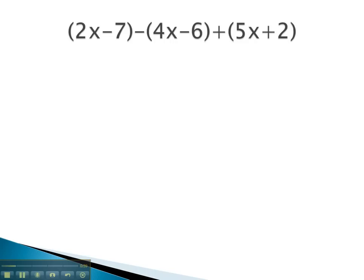In this problem, we've got the polynomial 2x minus 7. We subtract the polynomial 4x minus 6, and then we add the polynomial 5x plus 2. You'll notice there is a subtraction, negative or opposite sign in the middle, and so we're going to have to distribute that on that second polynomial.